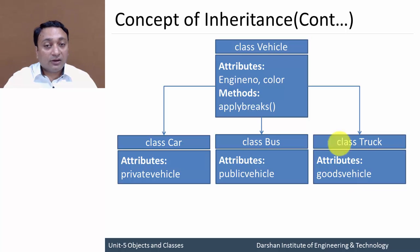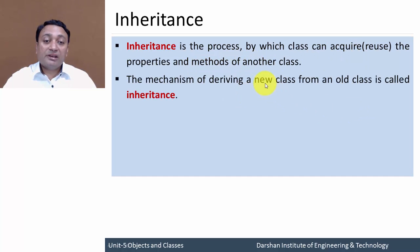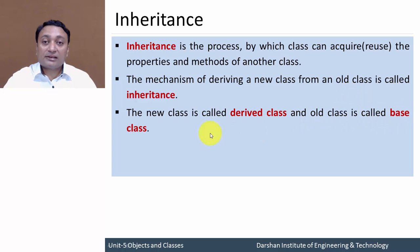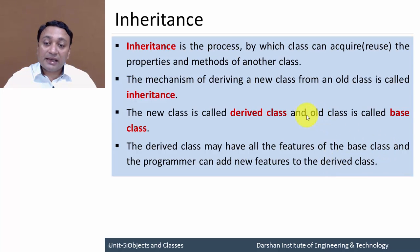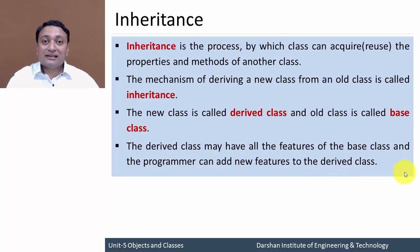Inheritance is the process by which a class can acquire or reuse the properties and methods of another class. If you are deriving one class from another, the original class is called the base class or parent class, and the new class is called the derived class or child class. The derived class may have all or some properties from the base class, and the programmer can also add new features to the derived class.